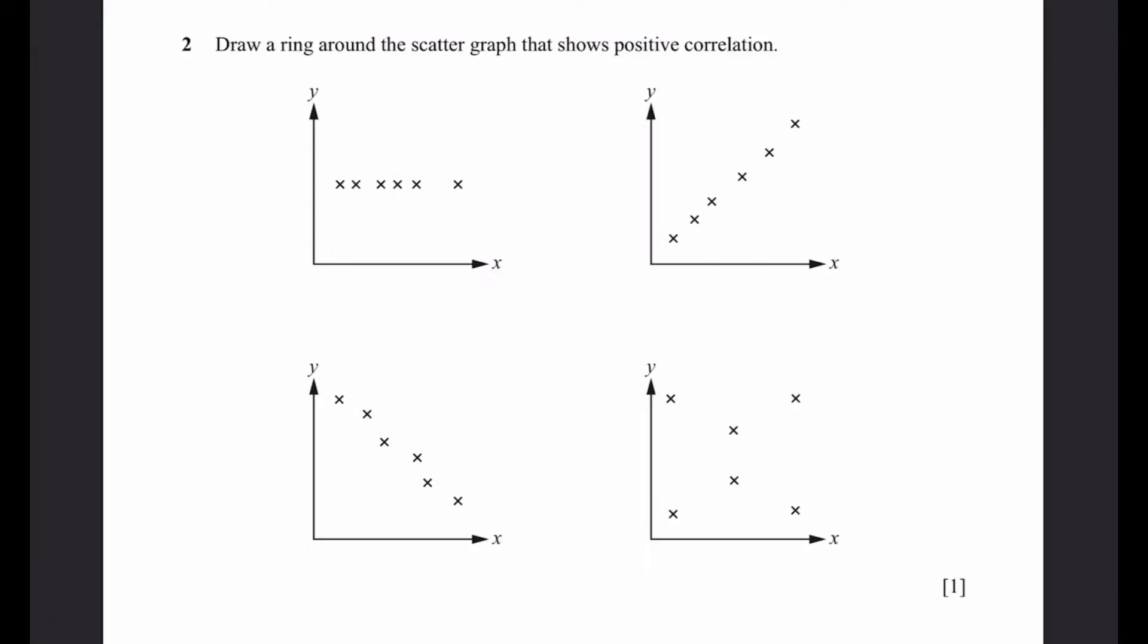Question 2. Draw a ring around the scatter graph that shows the positive correlation. Positive correlation means when one value, or the x value, increases, the y value also increases. And we can see that this is only viewed in this line here. This is negative correlation, this is no correlation, this is also no correlation since they're scattered. So this is the answer.